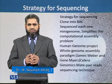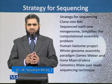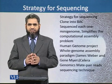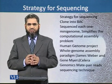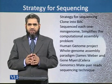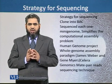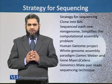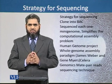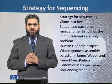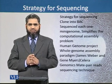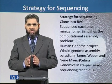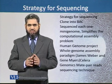Each BAC is sequenced one by one — this BAC-to-BAC strategy simplifies the computational assembly problem in the way that repeating fragments present in the human genome are reduced by 30,000 times, because we have used 30,000 BACs to sequence the human genome.